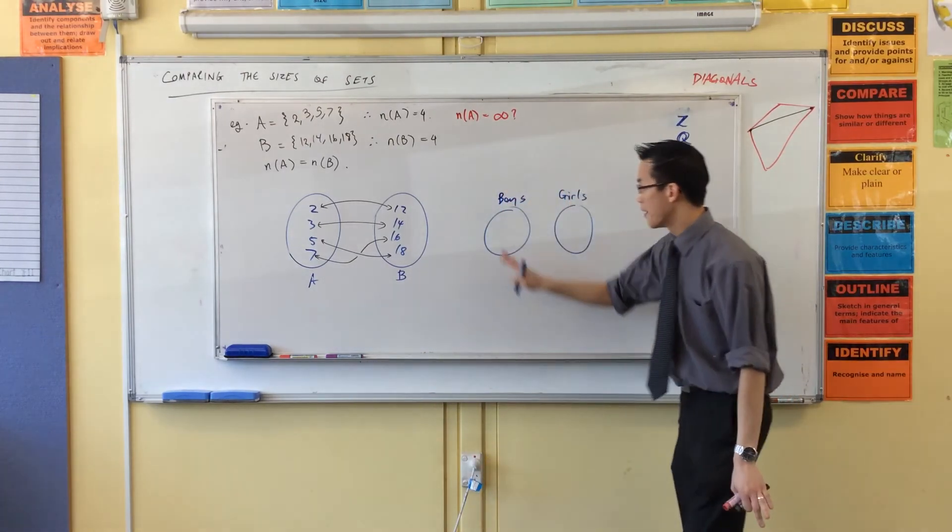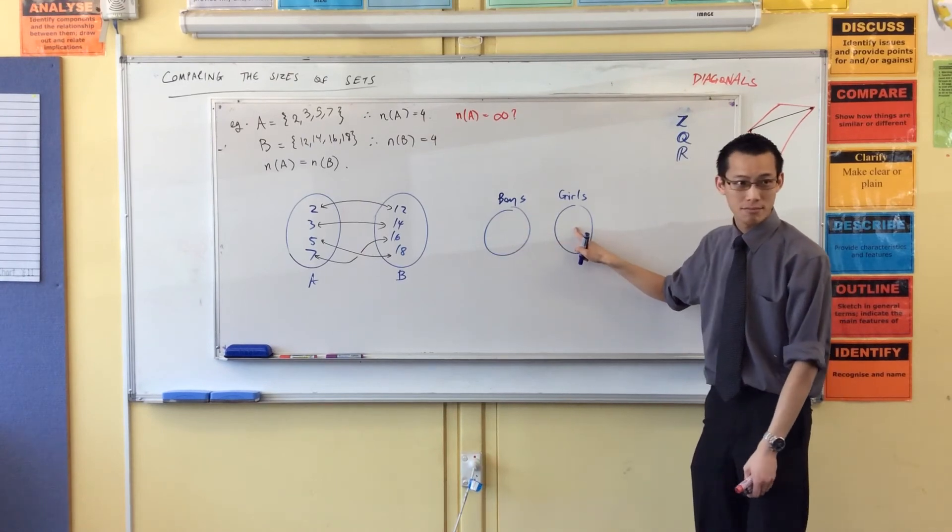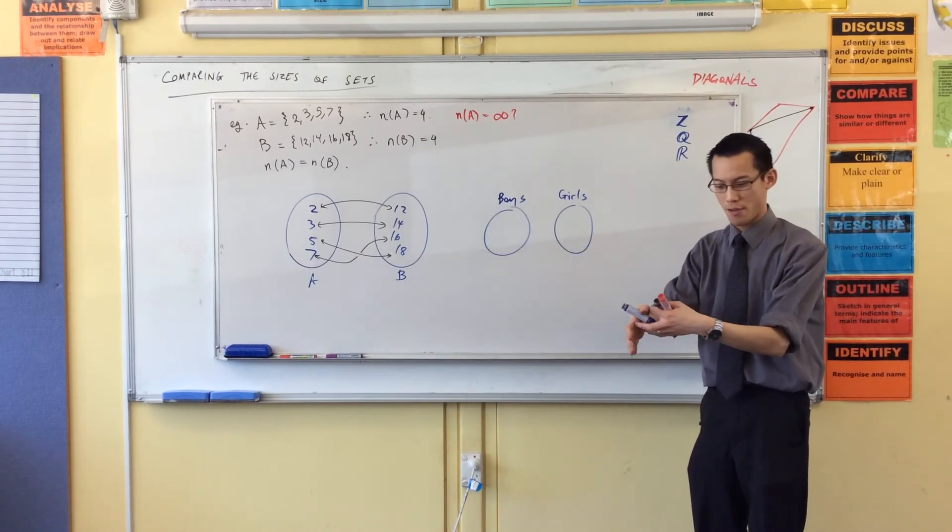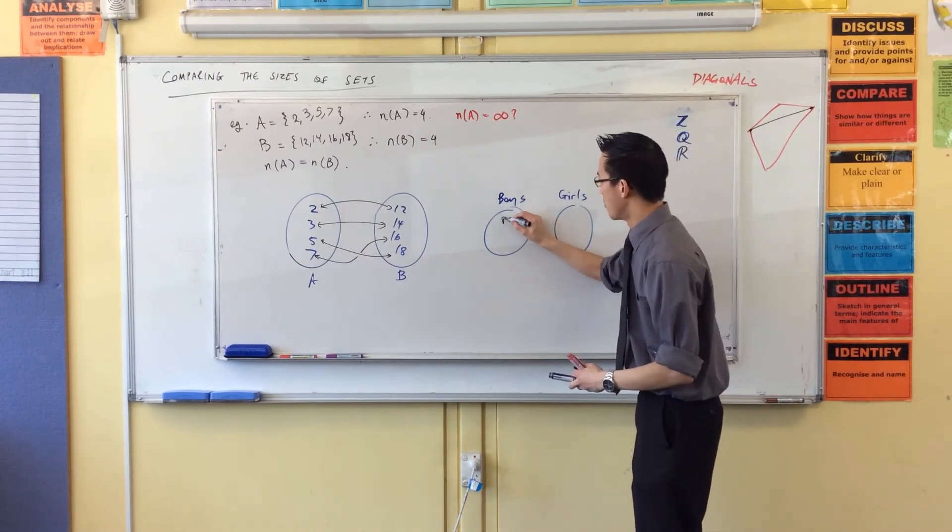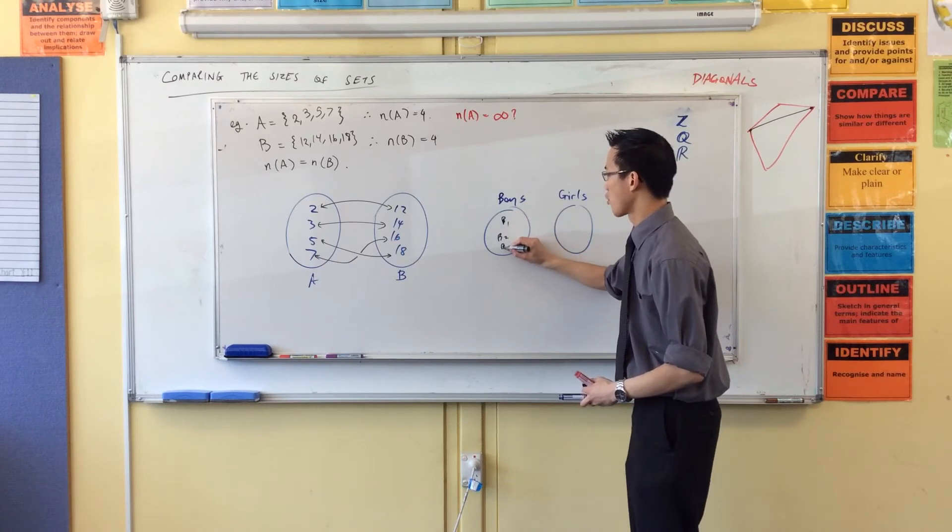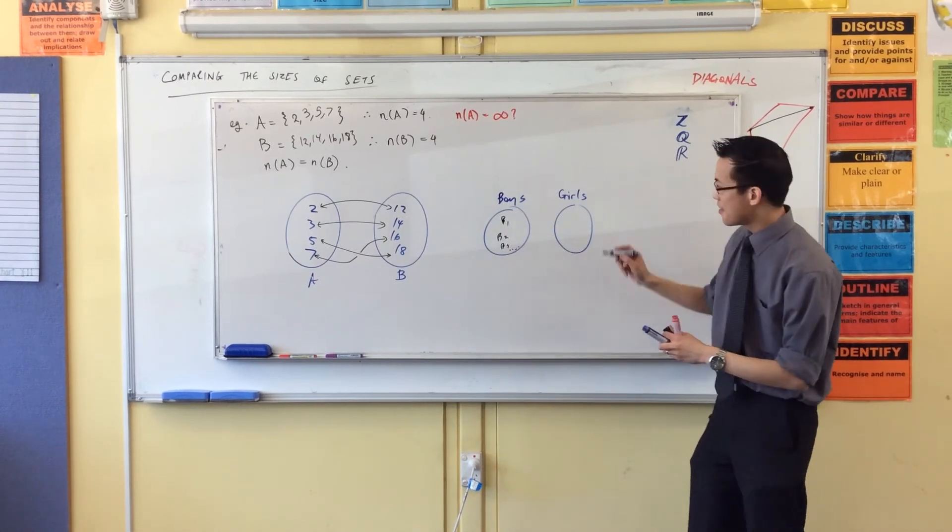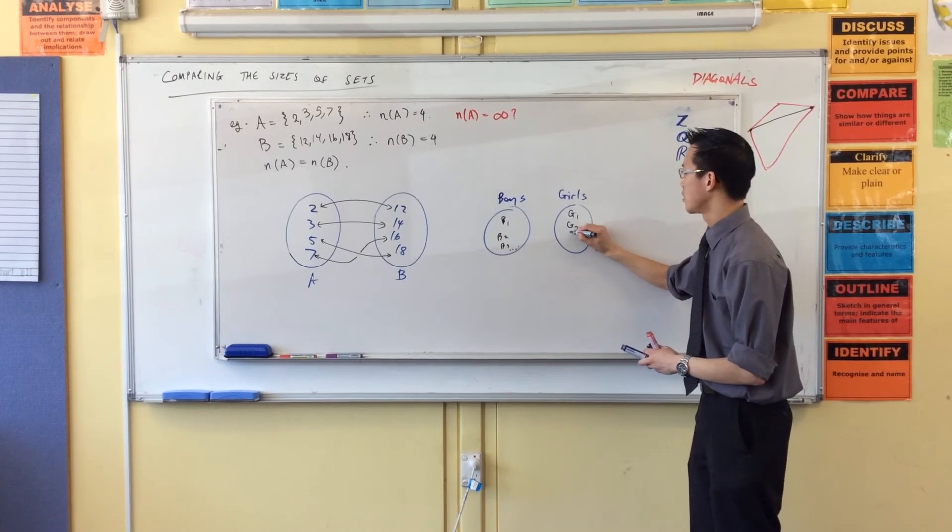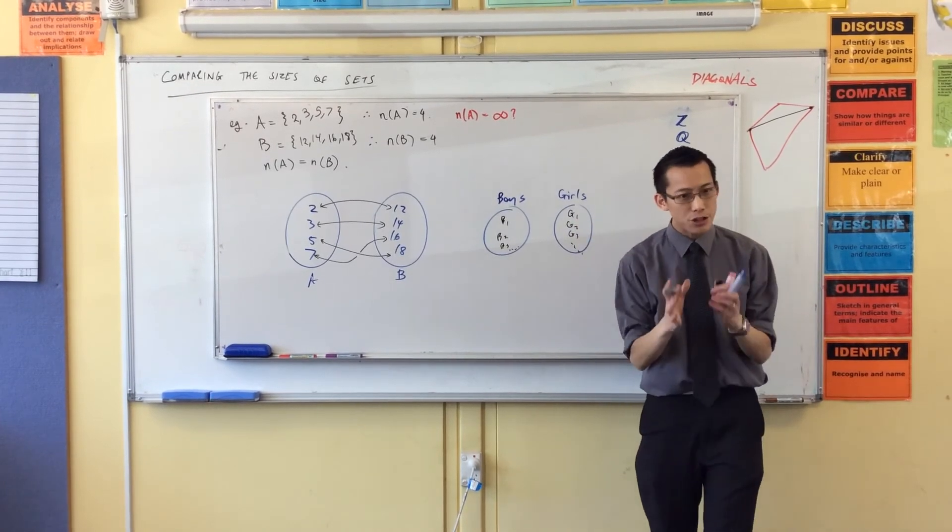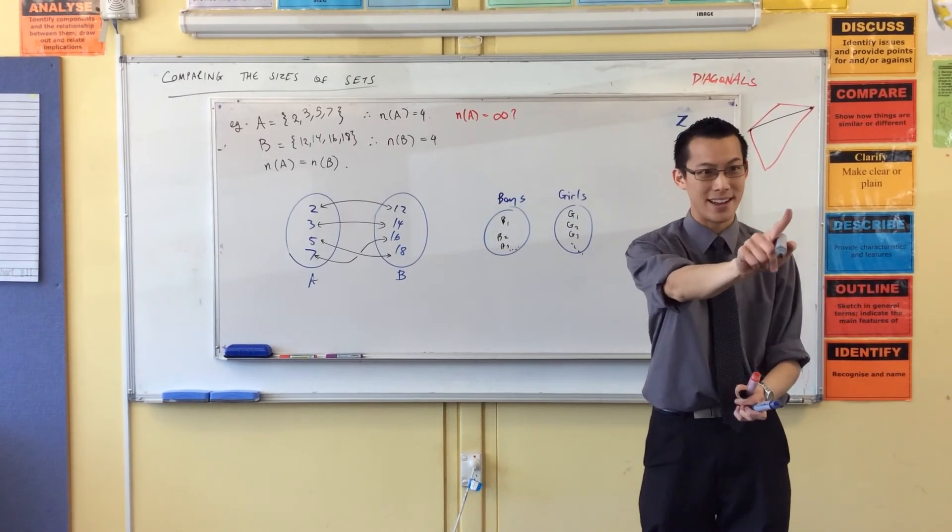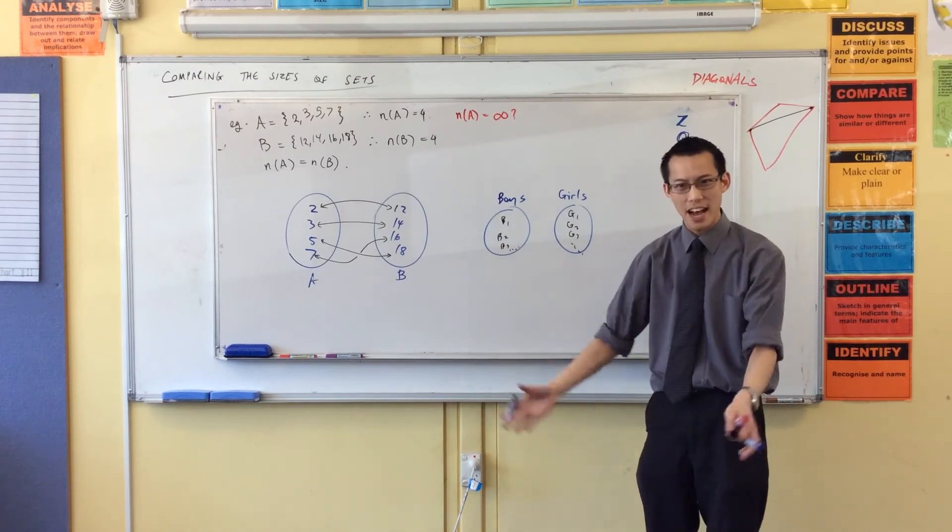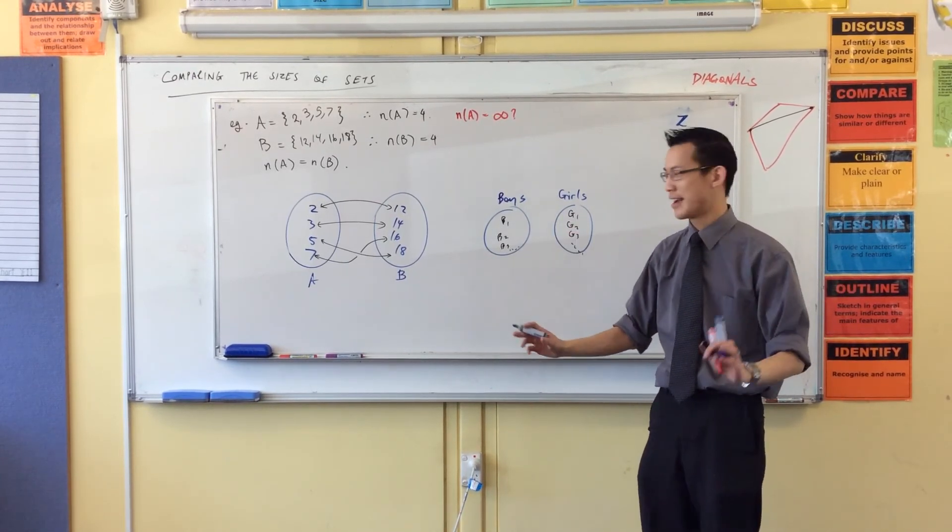So you've got boy one, boy two, boy three, and so on, and girl one, girl two, girl three, and so on. You don't know how many there are. But if at the end, after they've all sorted themselves out and hopefully not got a case of boy-girl germs, if they have all matched up, you don't need to know how many there are because you have matched up every single one with another one in the other set.